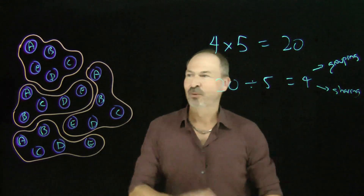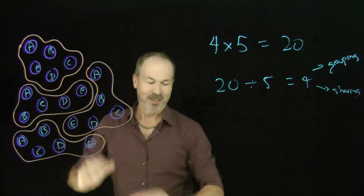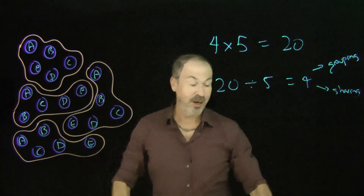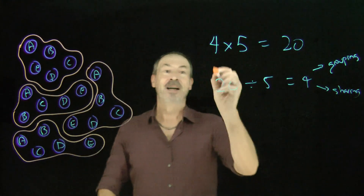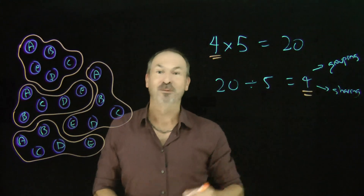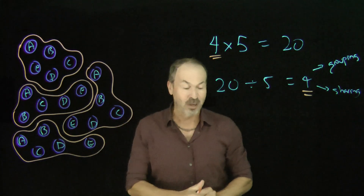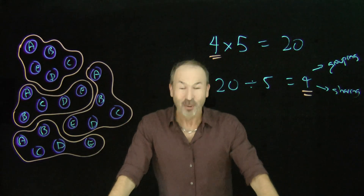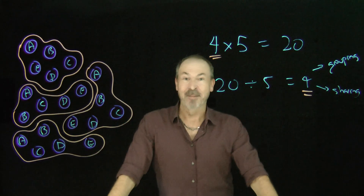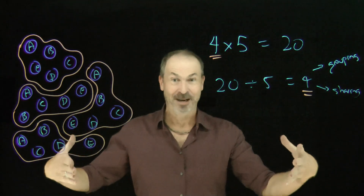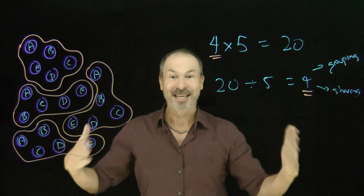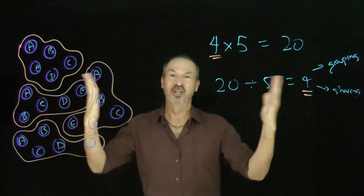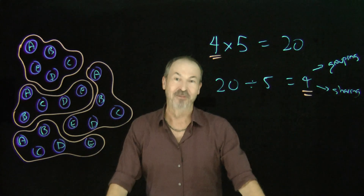Three different ways to interpret this one picture — and because it's one picture, all three interpretations must have the same answer. This explains why the number four keeps reappearing: it's all coming from the same one picture. The three different ways to think about division, as presented in school curricula, are indeed equivalent, and it would be absolutely thrilling and wonderful to share that discussion with students.